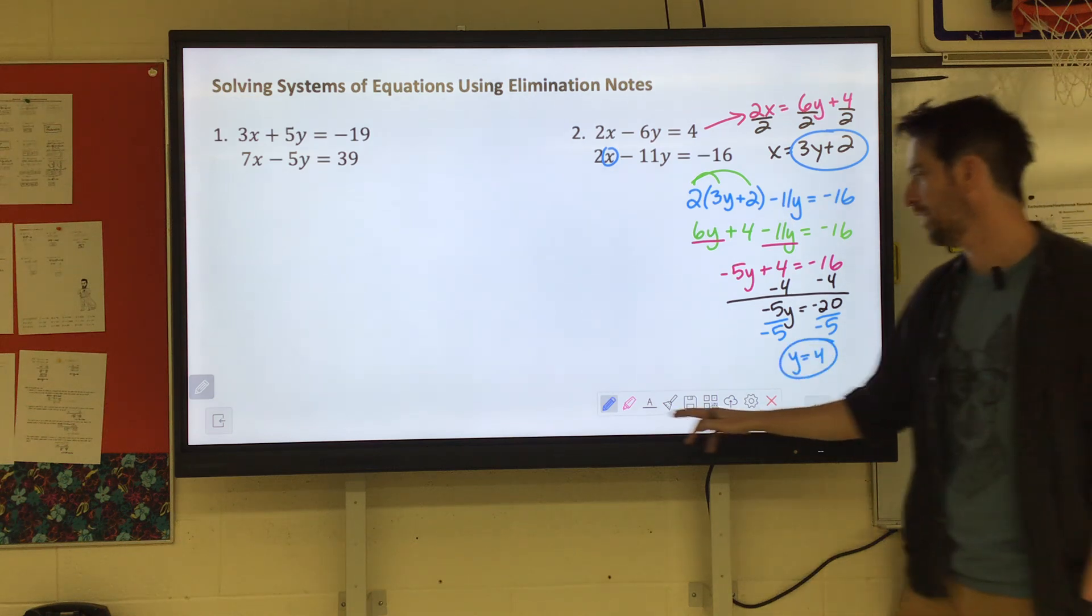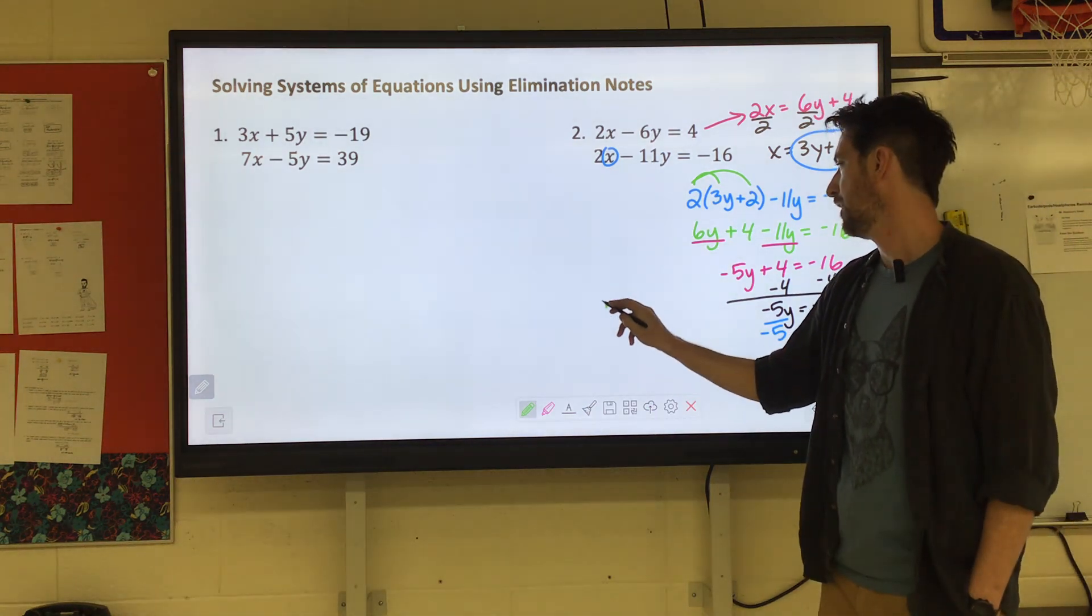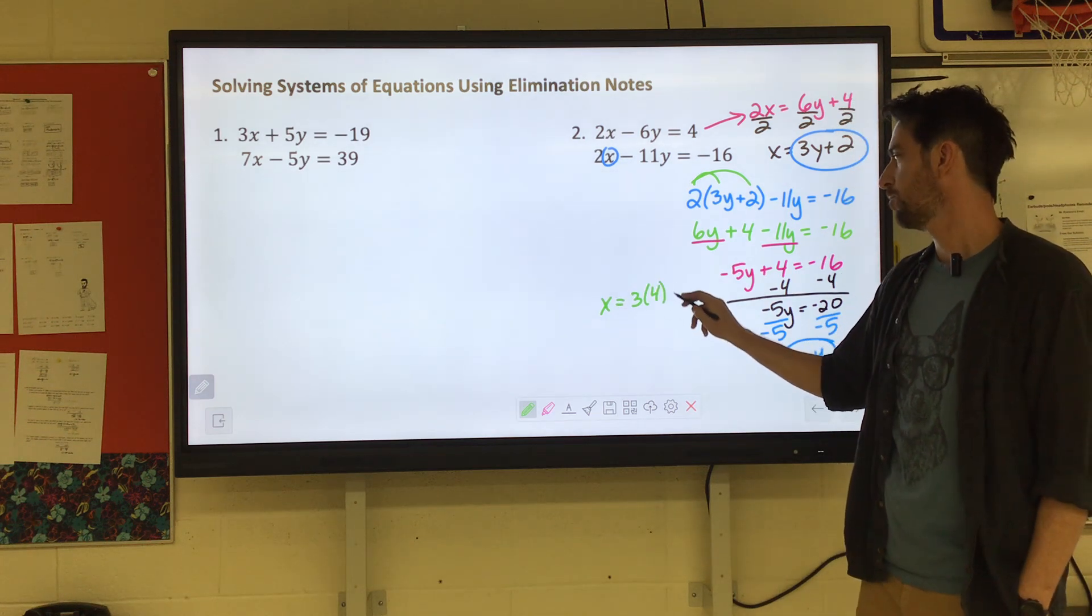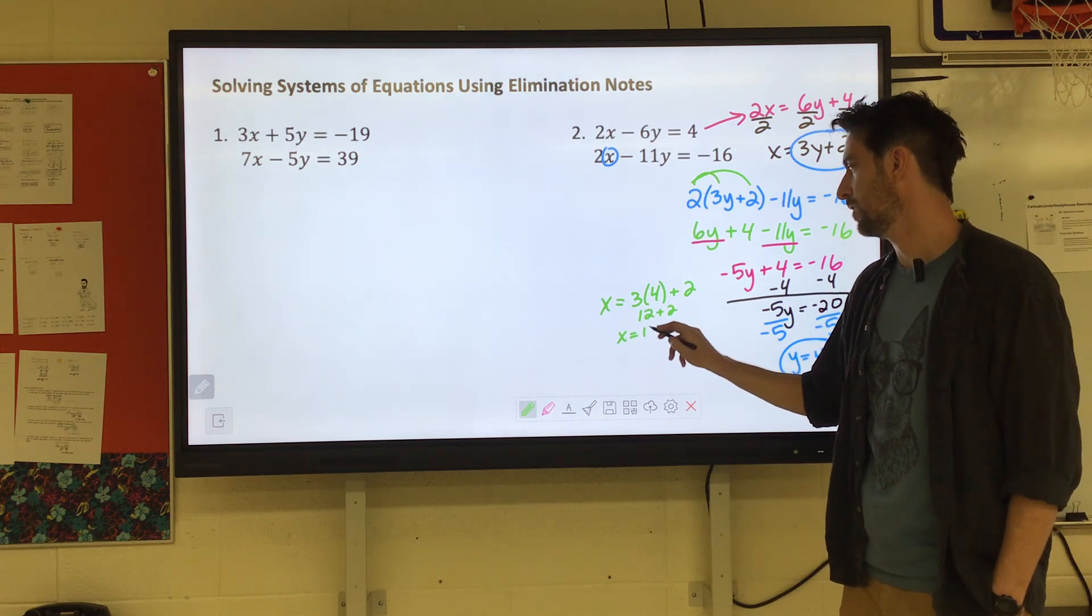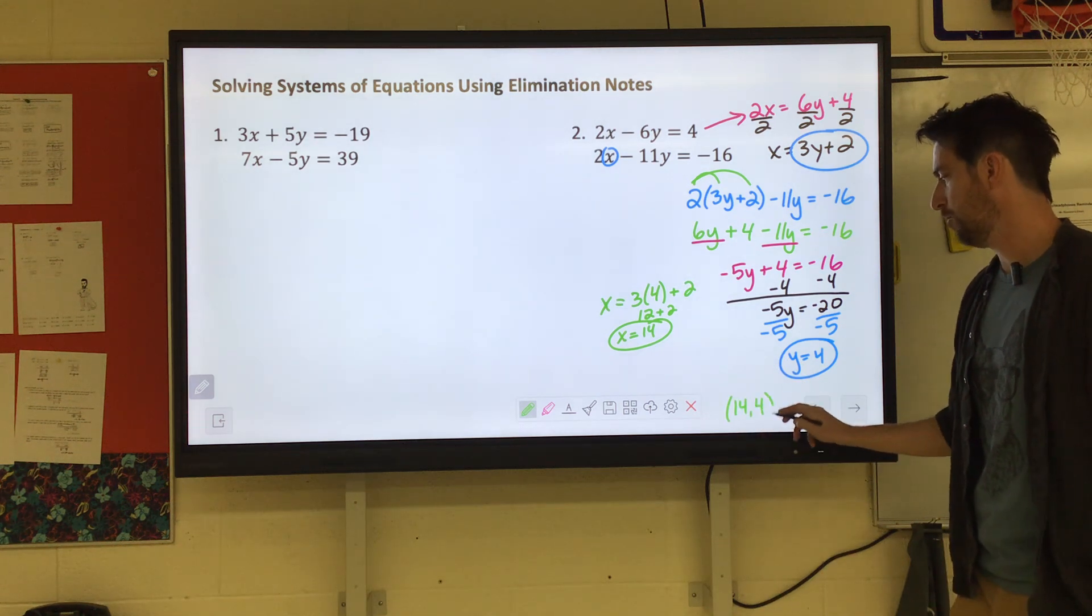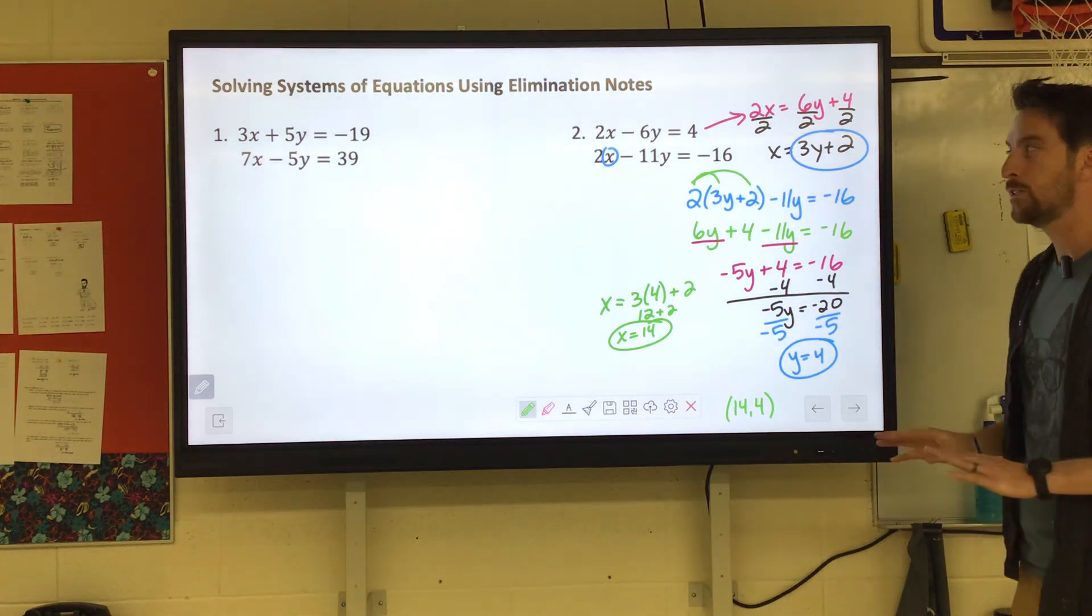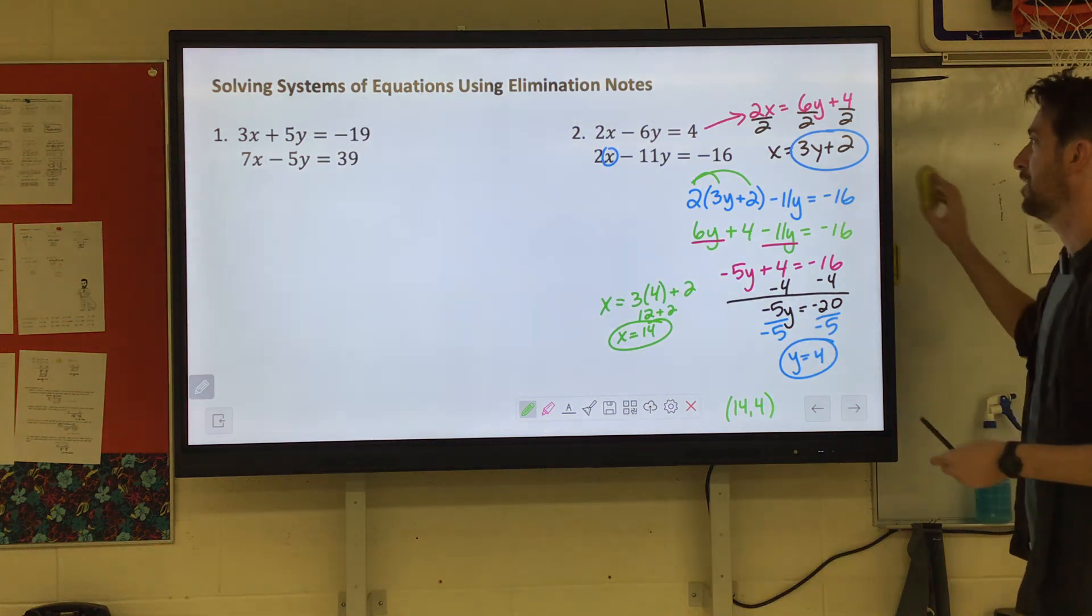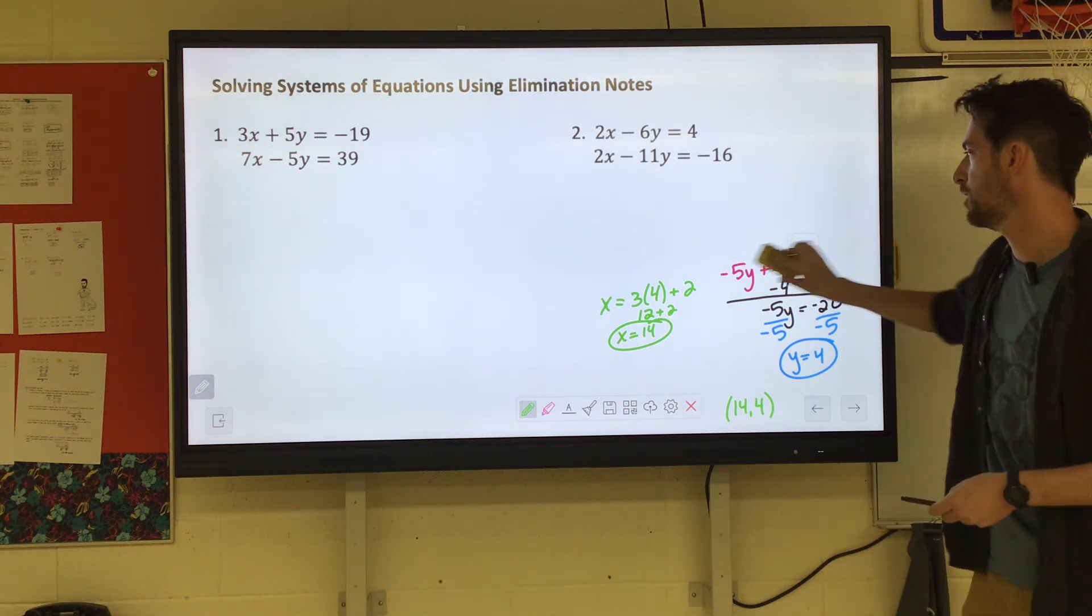Now we still need to find X so you can substitute it into any of the equations. Let's say I went with this 3Y plus 2. X equals 3 times Y equals 4 plus 2. That would give us 12 plus 2 which is 14. So our coordinate would be 14, 4. Now again I hope you didn't write that because I said don't write that. We're going to probably get that same answer a different way but look how much work that took. And it's possible we could do it but there is another way to avoid having to do a lot of that work.